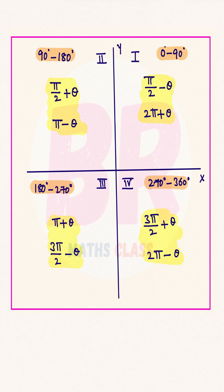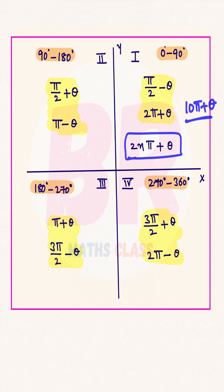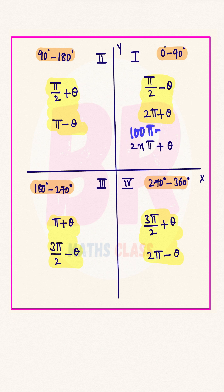Even number times pi plus theta — where 2n represents an even number — lies in the first quadrant. For example, 10 pi plus theta lies in the first quadrant, and 100 pi plus theta also lies in the first quadrant. Even number times pi plus theta always lies in the first quadrant.